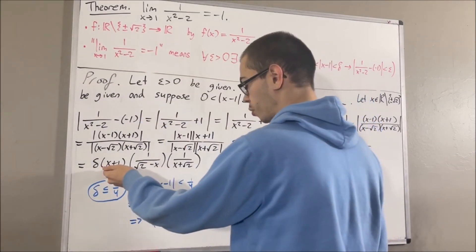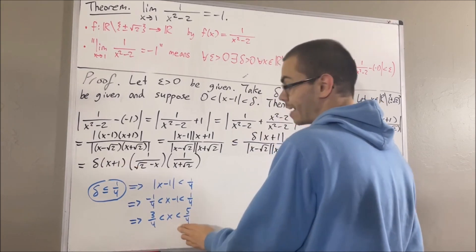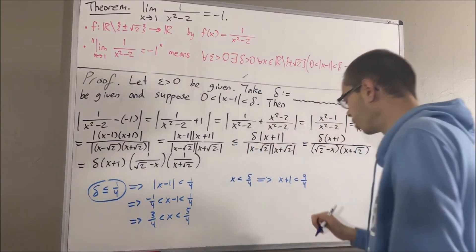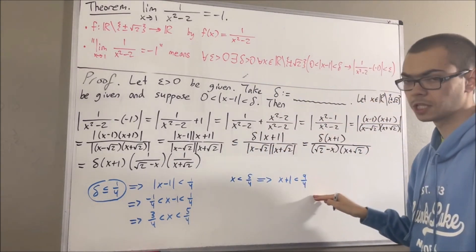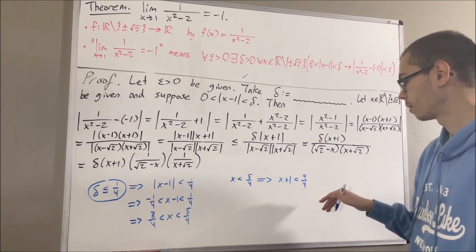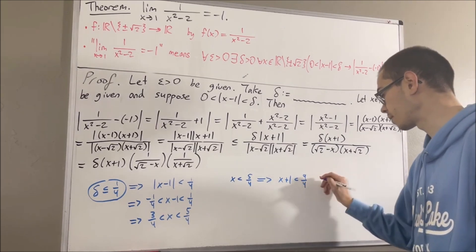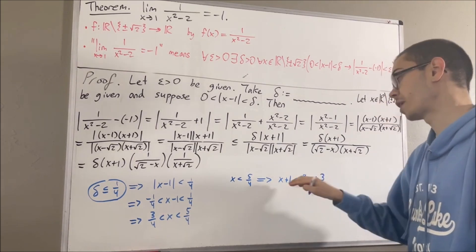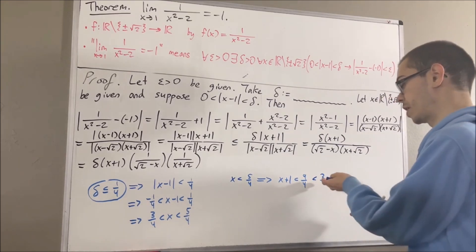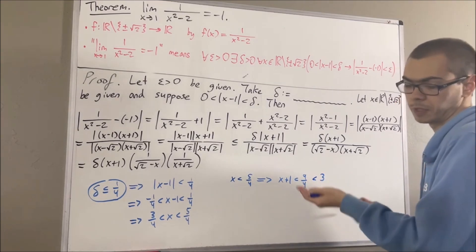Starting with x plus 1: all we have to do is take the inequality x is less than five-fourths and add 1 to both sides. We get x plus 1 is less than nine-fourths. Since nine-fourths is less than 3, we also know that x plus 1 is less than the fixed positive quantity 3 — and I'm just going to use 3 instead of nine-fourths because it looks nicer.